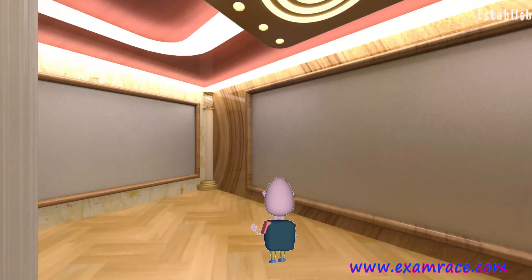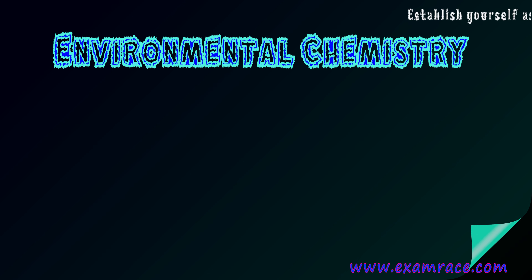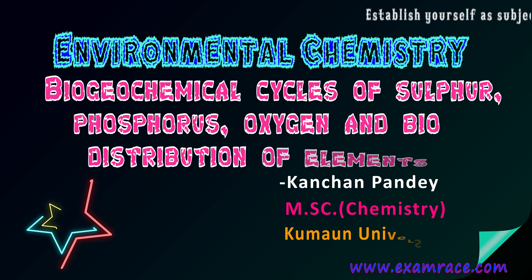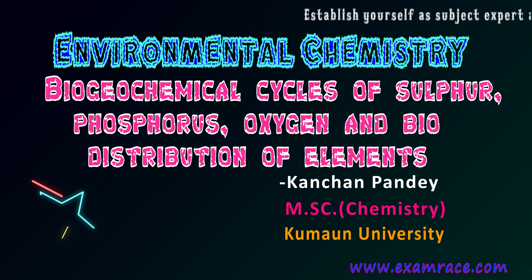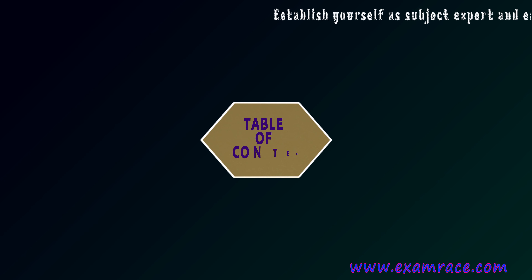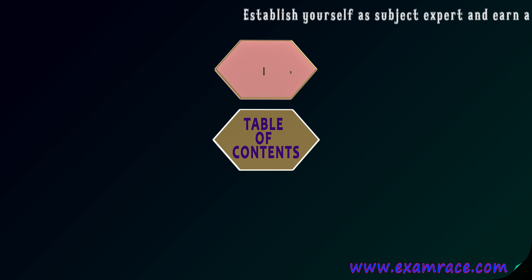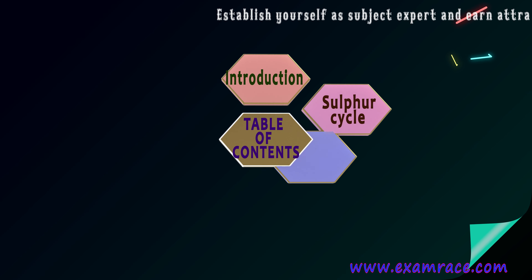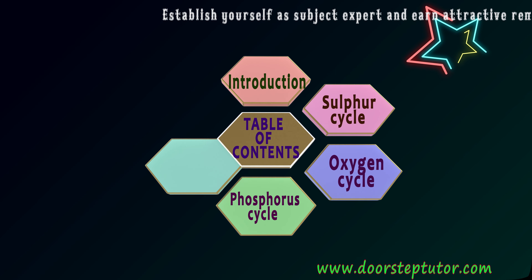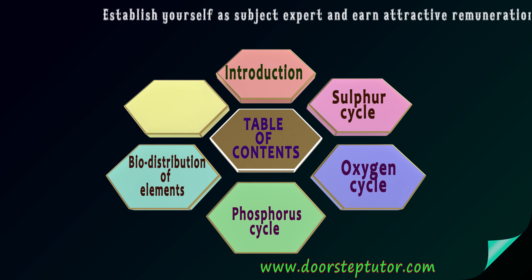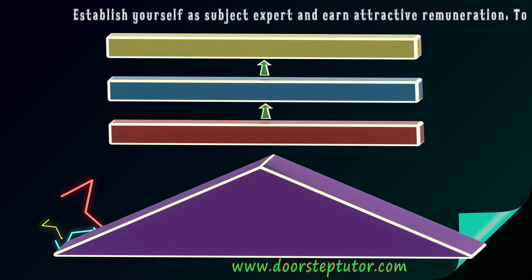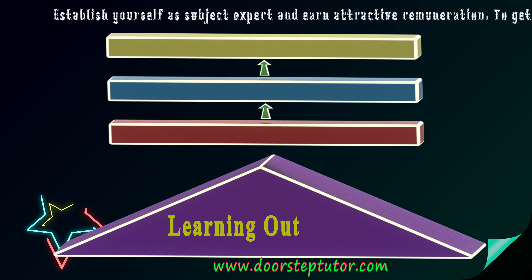Welcome to this lesson on environmental chemistry. The new topic is biogeochemical cycles of sulfur, phosphorus, oxygen, and the bio distribution of elements. The table of contents for this series covers the introduction, sulfur cycle, oxygen cycle, phosphorus cycle, bio distribution of elements, and a summary. For this particular video, the learning outcomes are the introduction of the sulfur cycle and all the reactions involved in it.